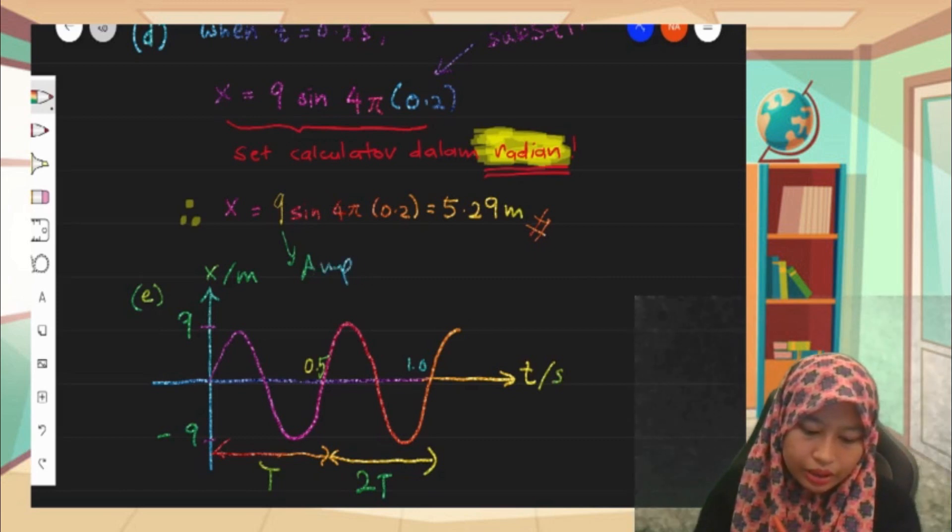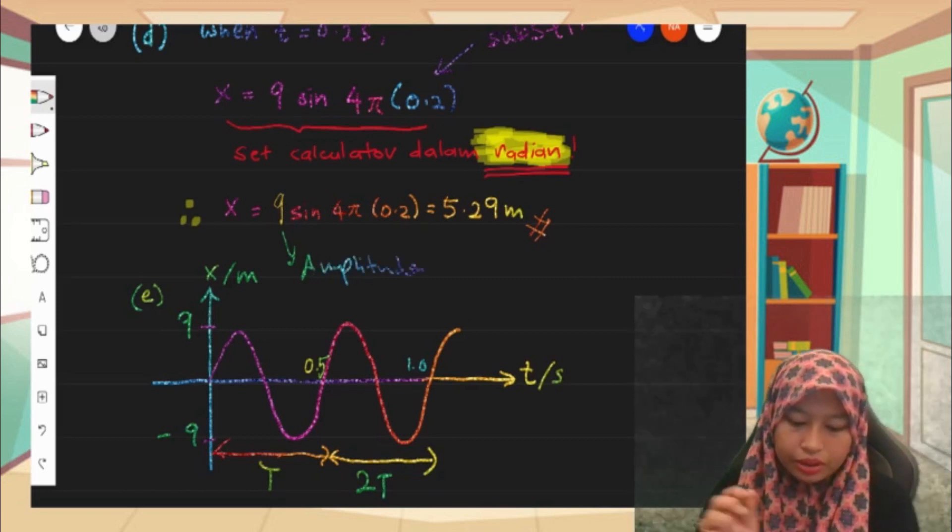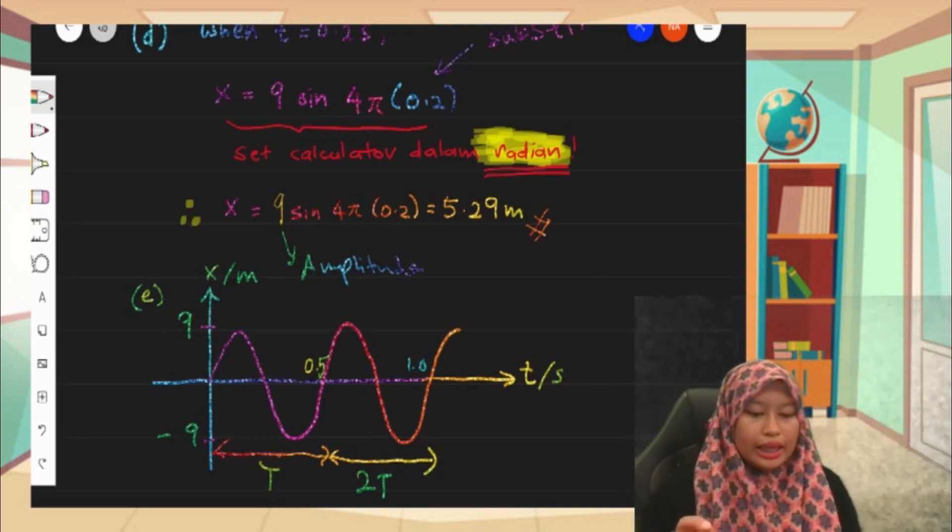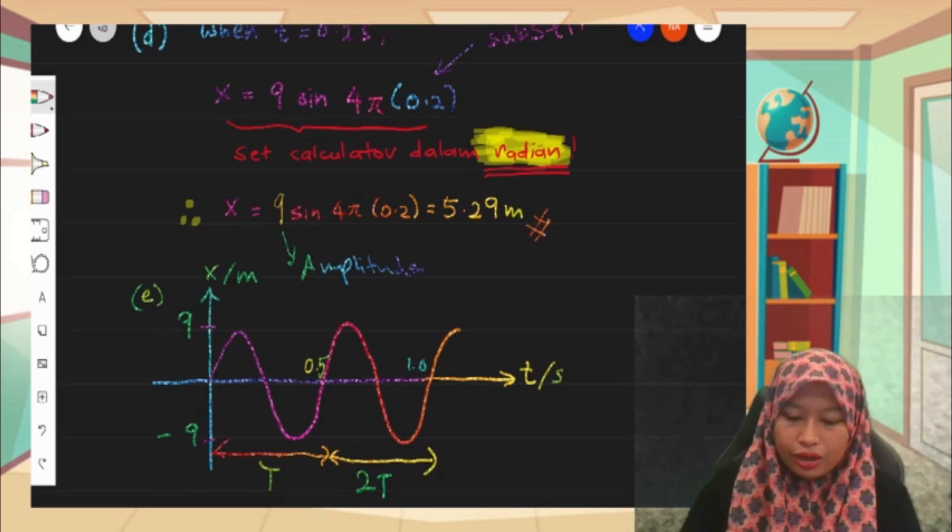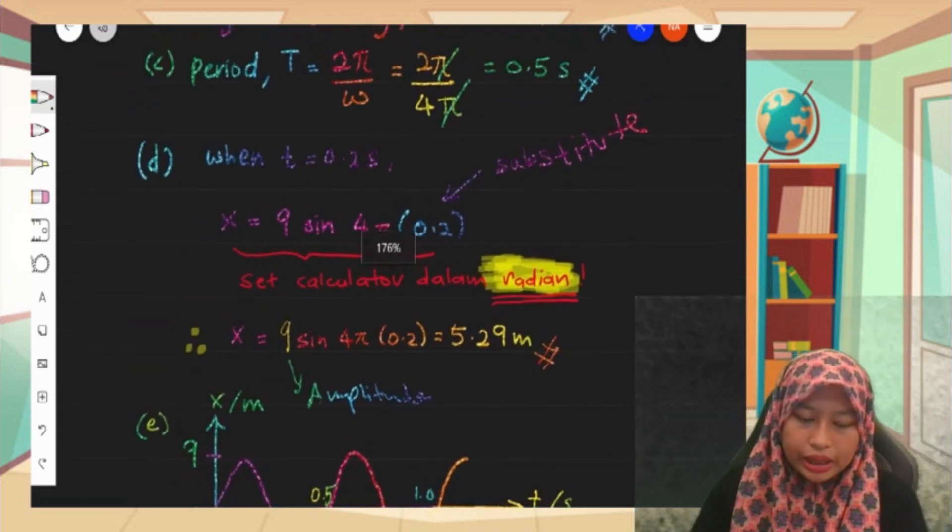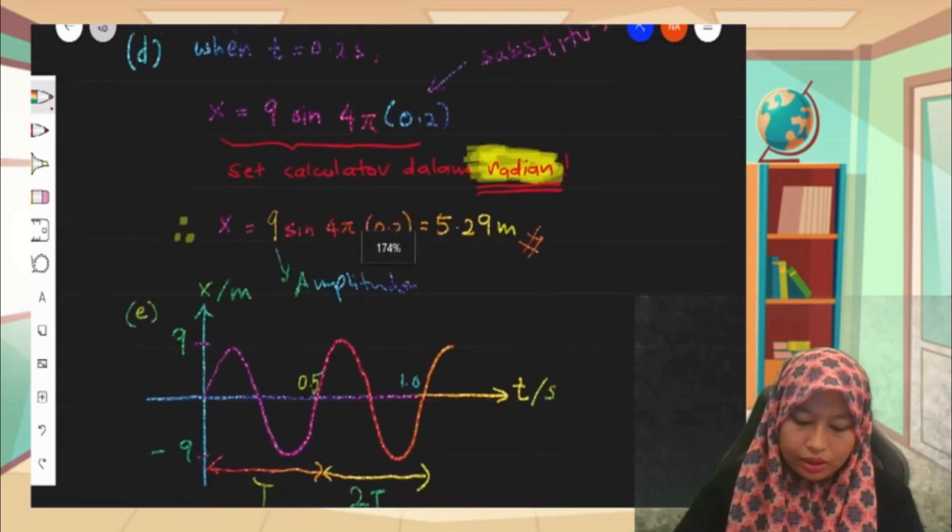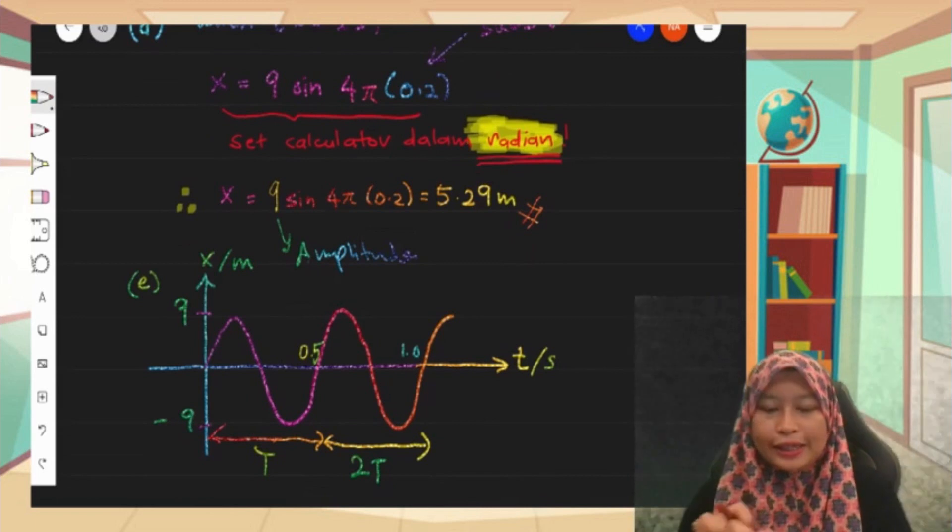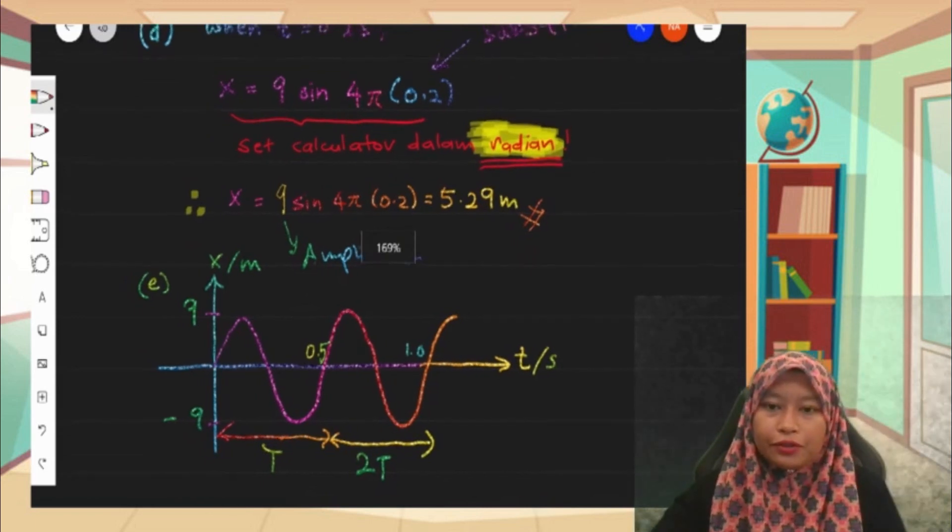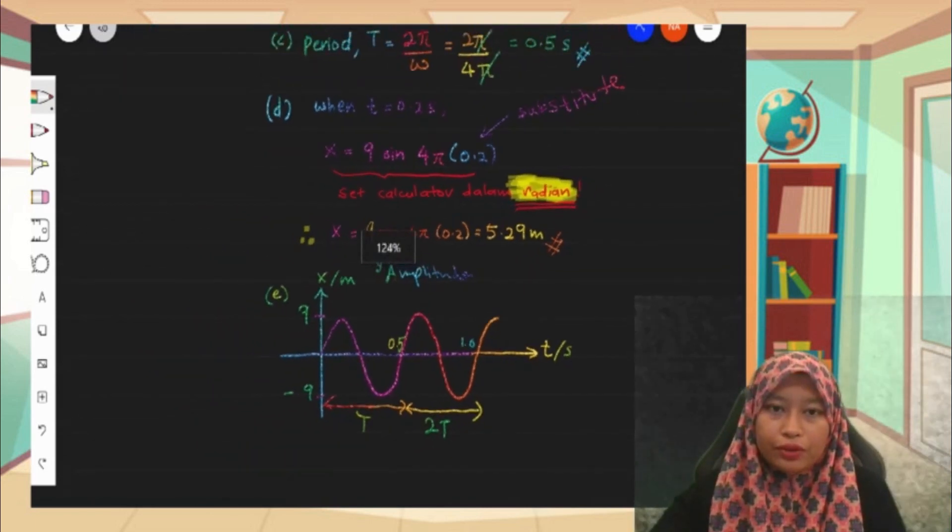This is amplitude. And the period 0.5, I got from question C just now. So that is how you sketch the graph for number 4E.